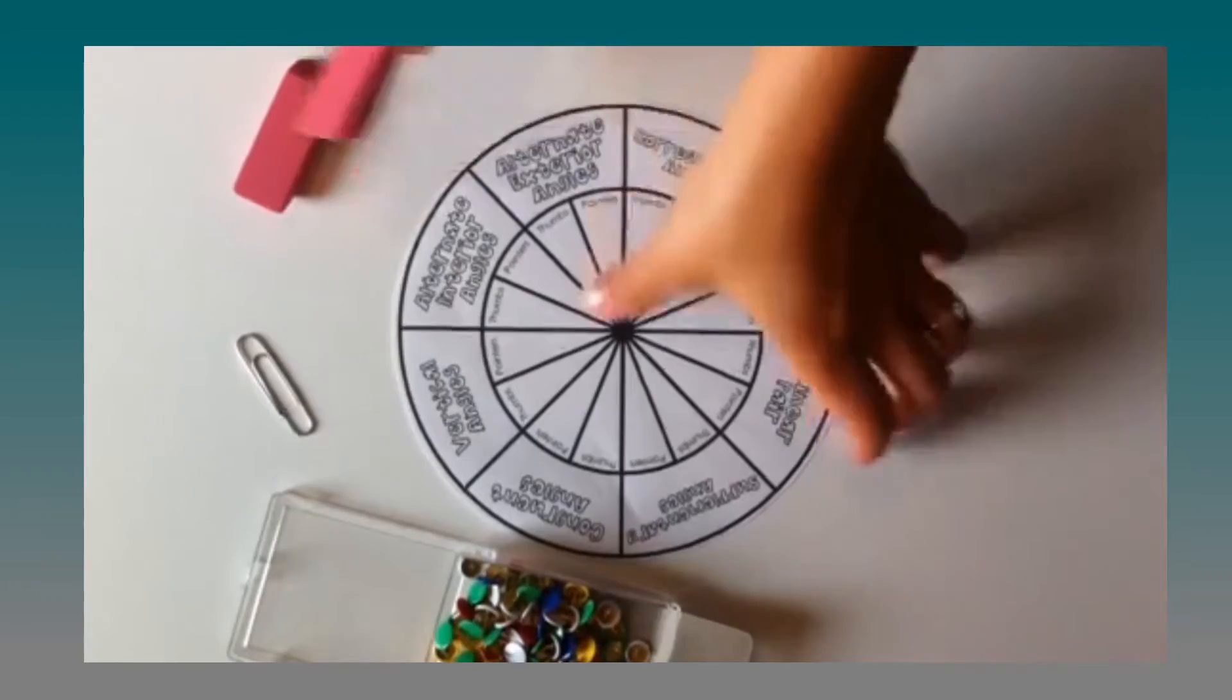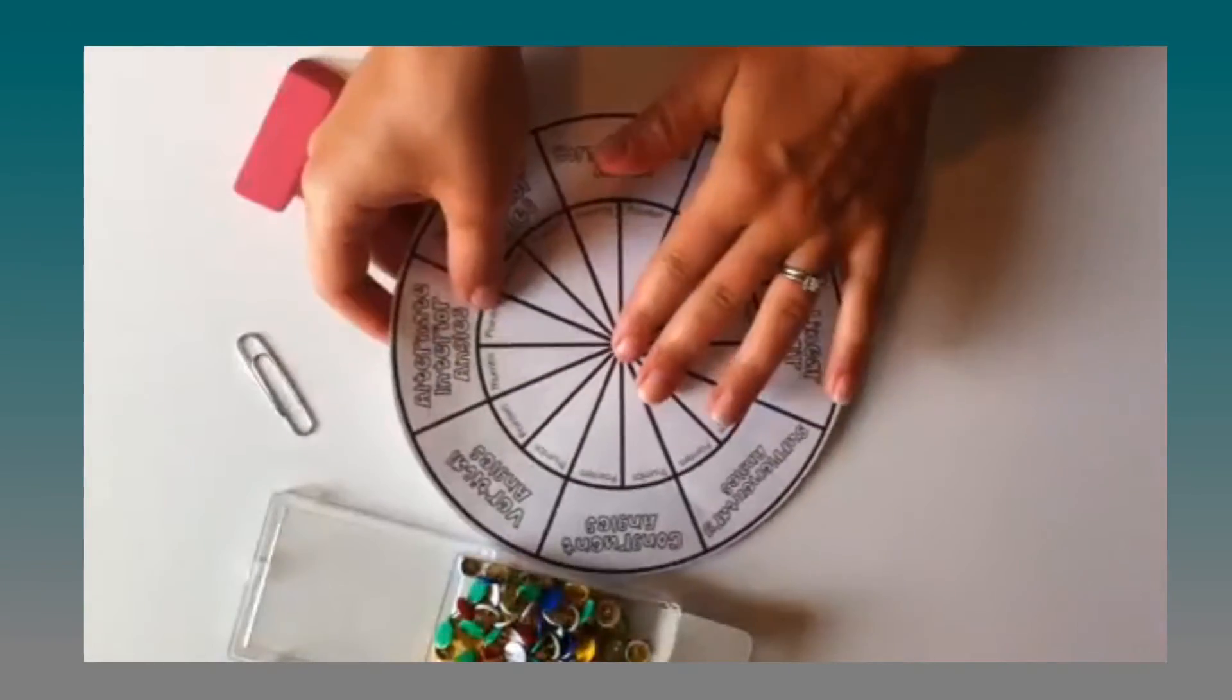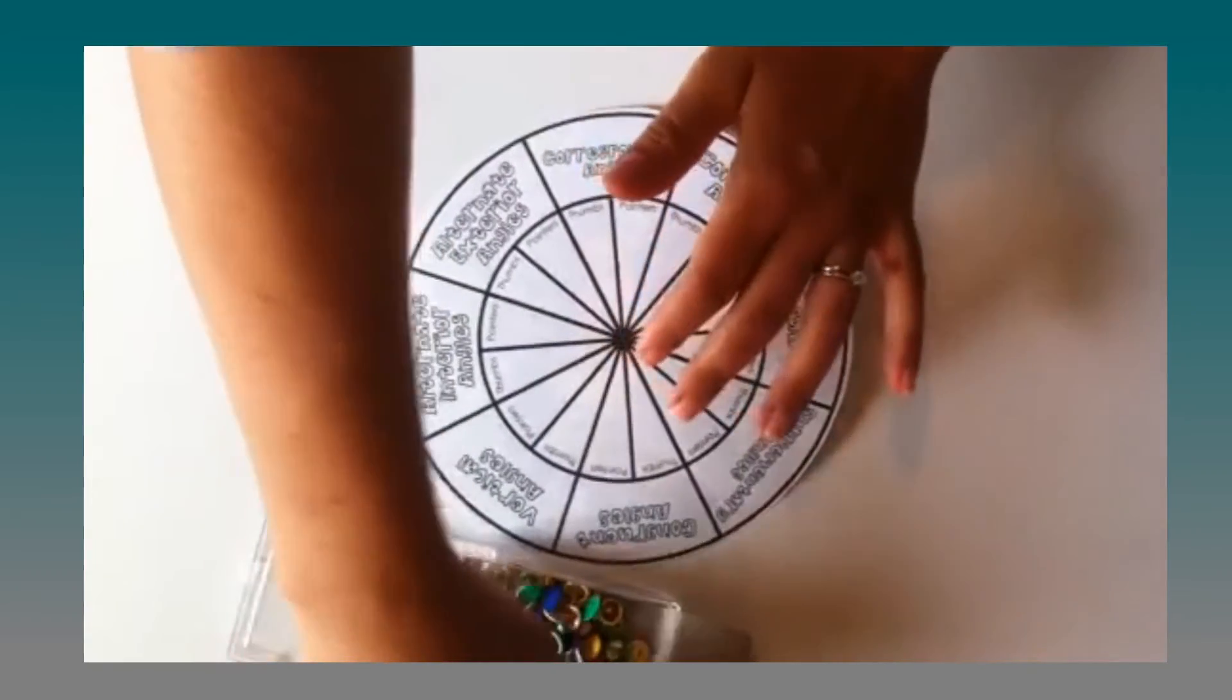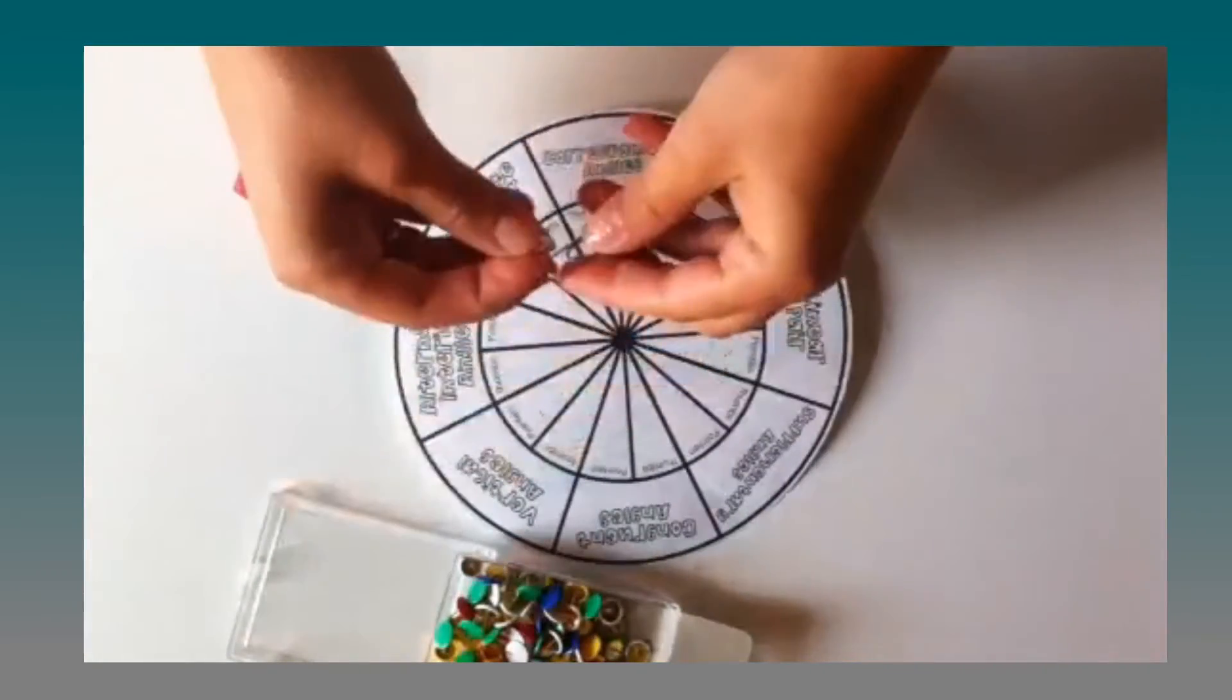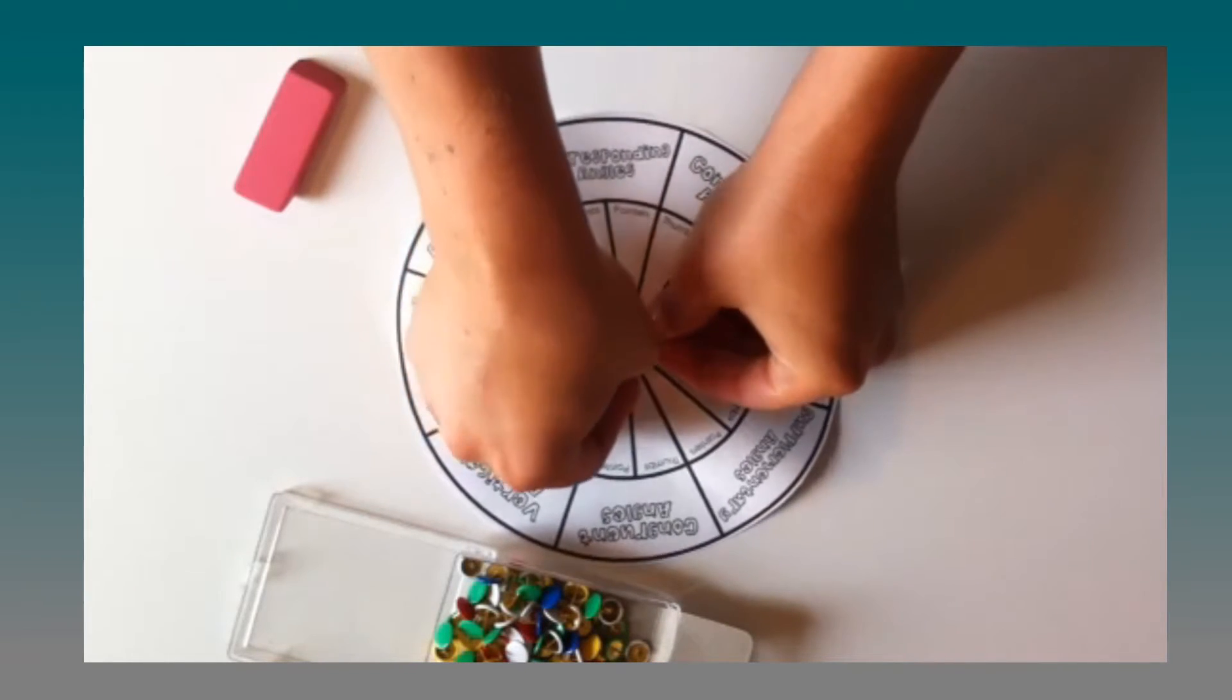First to assemble your spinner you're gonna need an eraser or a little piece of cork board, a little square, a push pin and then a paper clip or if you don't have enough paper clips for your class you can use the little printable paper arrows but they just don't spin quite as well.